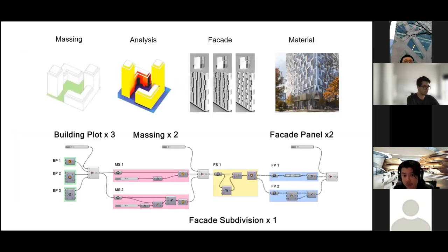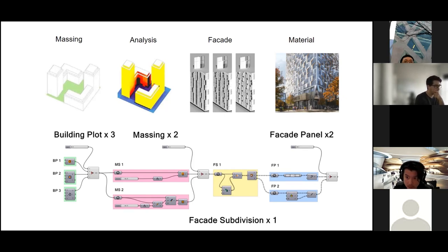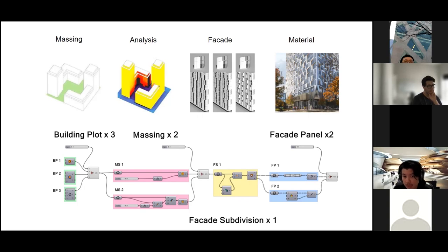If we simplify building design and look at a few stages of work — massing analysis, facade, or material as individual functions — then a final design of a building is made of all these different parts. If we change one piece of a function, the overall design outcome will be completely different. This is not very new in concept.